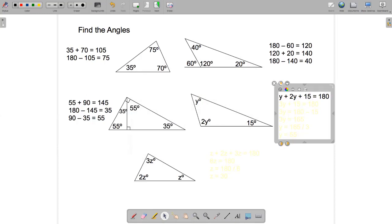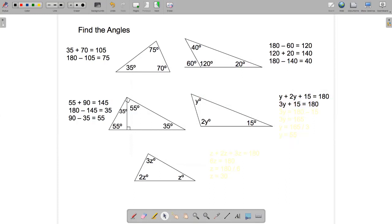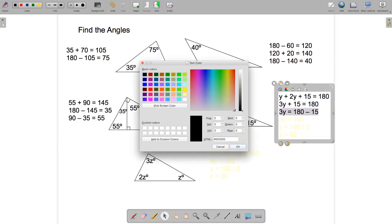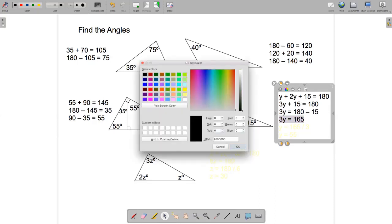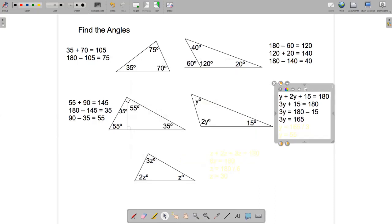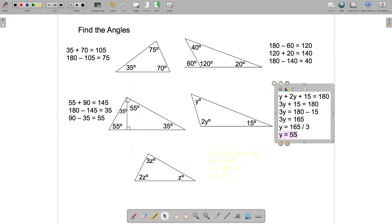So I've got y plus 2y plus 15 equals 180. If I subtract 15 from both sides, that will cancel the 15 on the left-hand side. And on the right-hand side, we'll have 180 minus 15. And then 180 minus 15 is 165. And then if 3y is equal to 165, y is equal to 165 divided by 3, and that comes to 55 degrees.